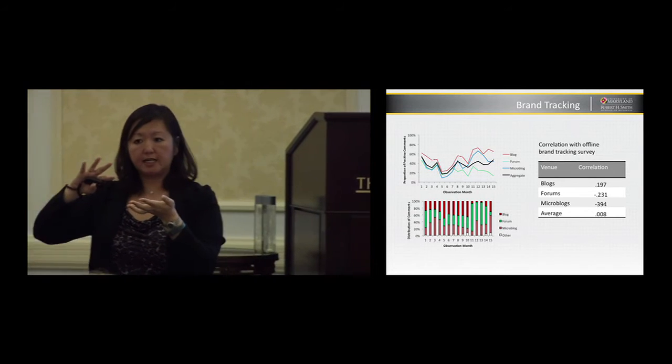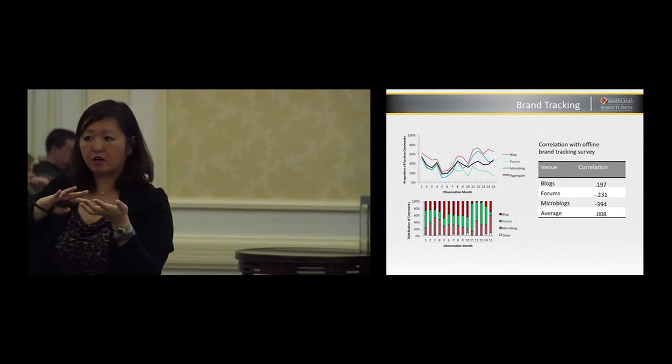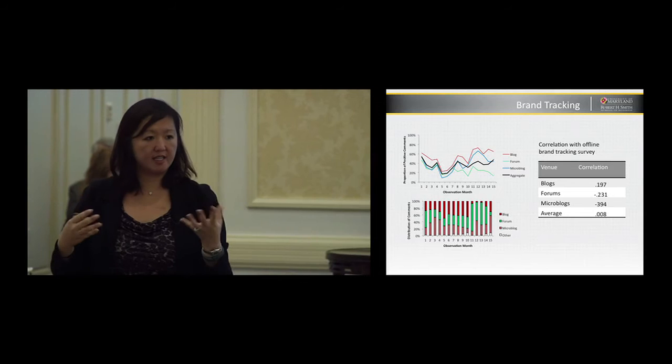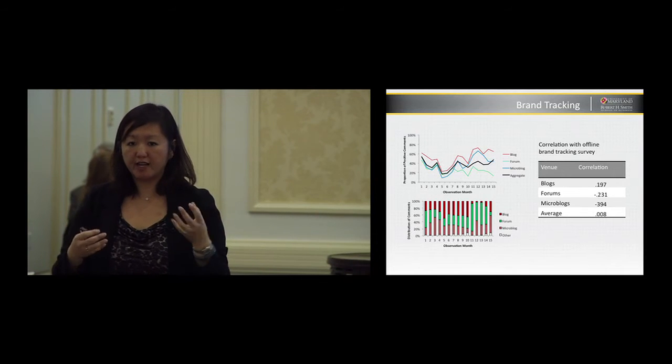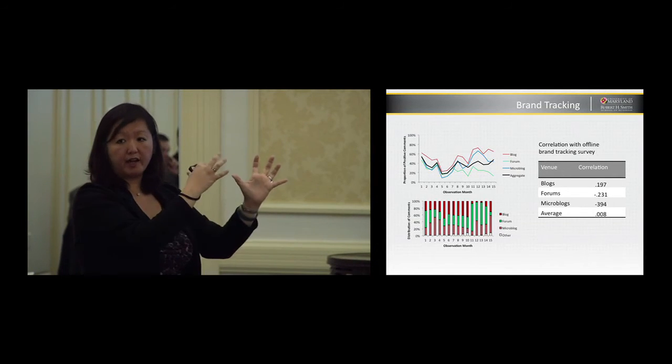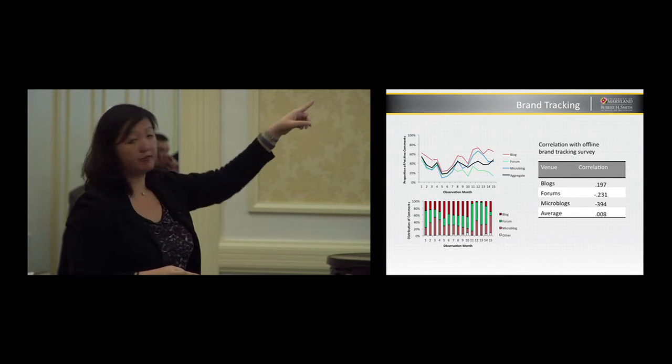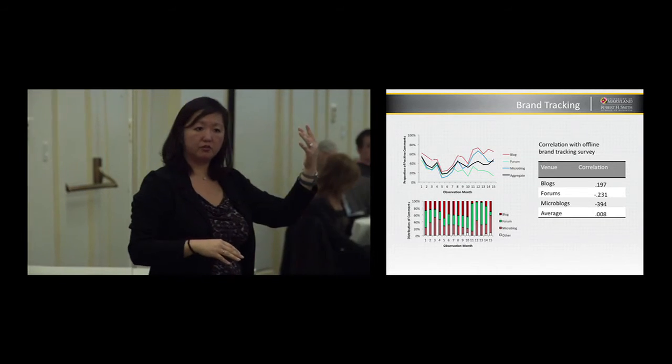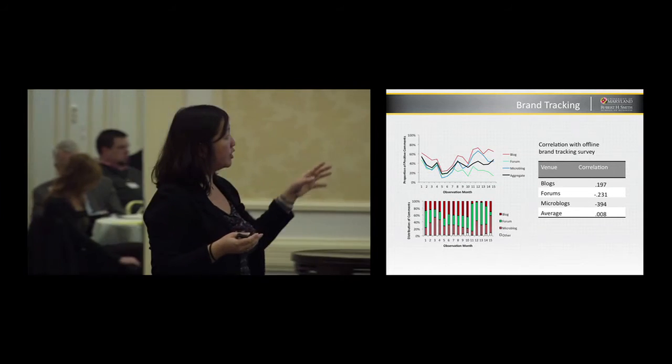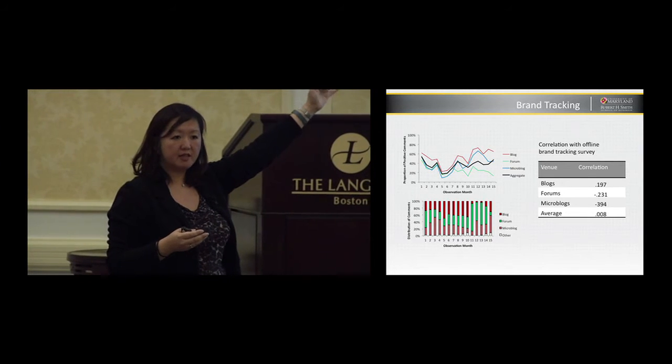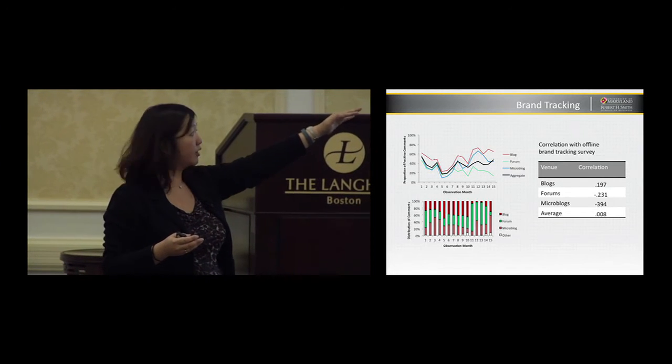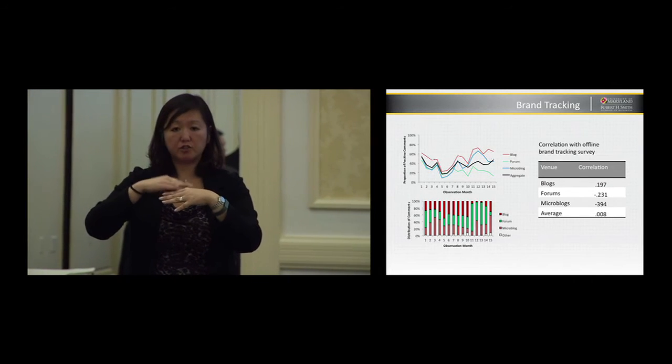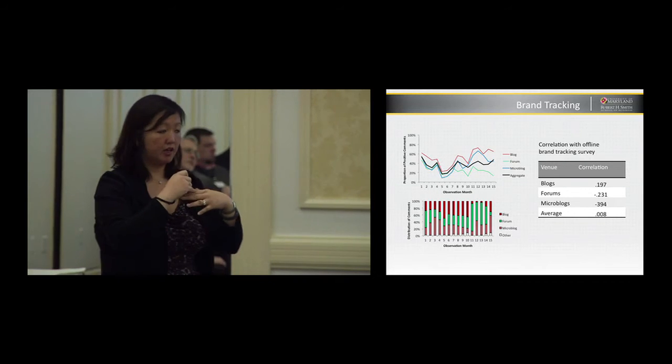And when you see these three distinct patterns of sentiment across these venues, what do we do as researchers? Companies like Radiant 6 or Topsy or other social media firms, they take all of these comments and they pull them together. They give you an average. That's that dark line right there. But that misses a lot of the dynamics within a venue or misses the differences across venues. Other folks will focus just on Twitter, that blue line. But then you're missing all the issues that are happening in that green line for discussion forums. And so there are real differences across venues that we really need to take into account when we think about online sentiment.